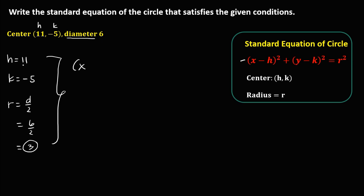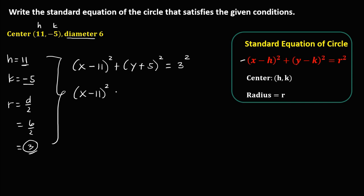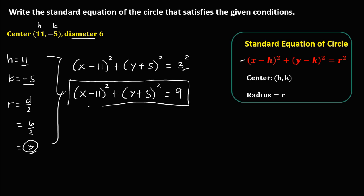Since h is positive 11, this becomes x minus 11, to the power 2. Plus y — since k is negative 5, this becomes positive 5 — to the power 2. Equals r, the radius is 3, to the power 2. Simplify: x minus 11 to the power 2, plus y plus 5 to the power 2, equals 3 squared which is 9. This is now the standard equation of the circle.